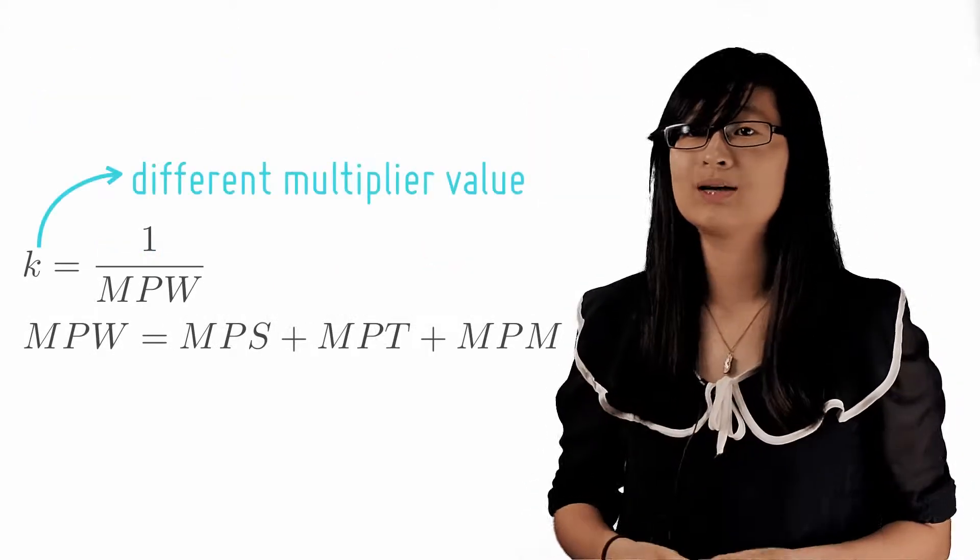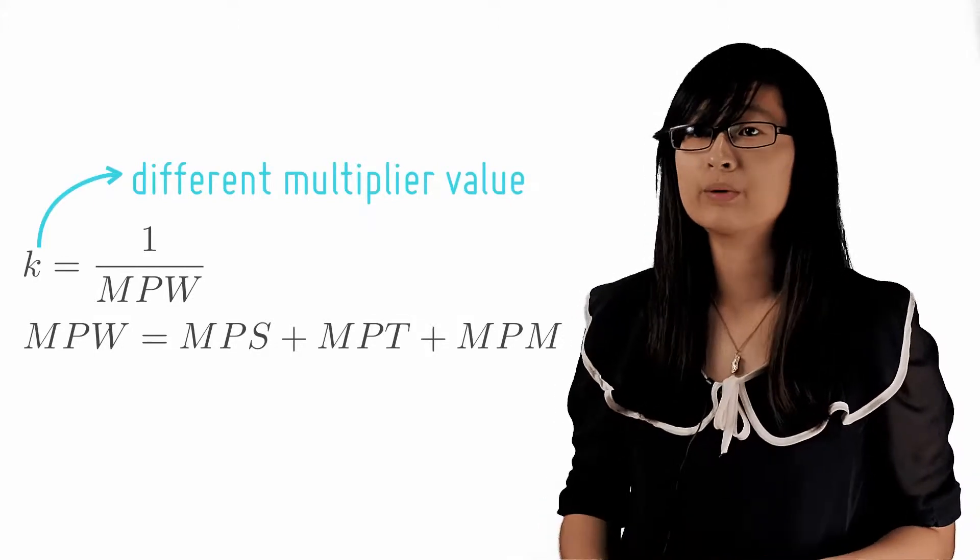And finally, every country has a different multiplier value depending on its marginal propensity to withdraw.